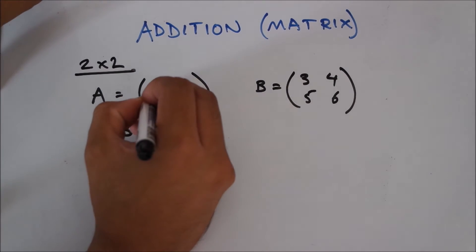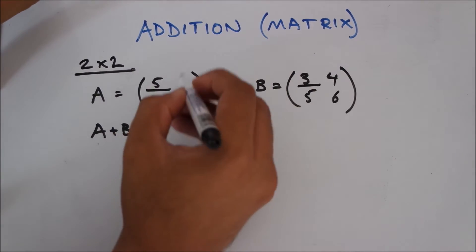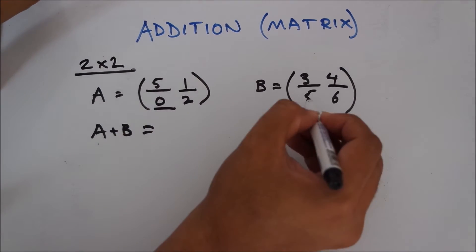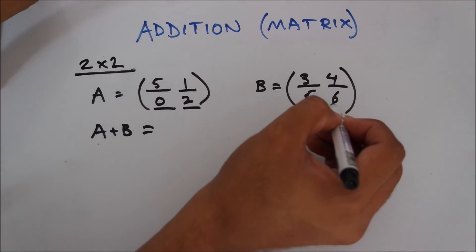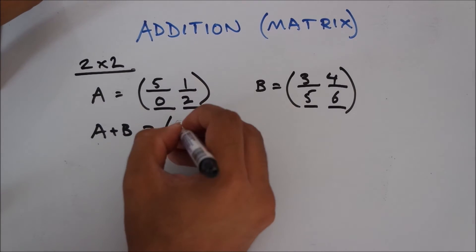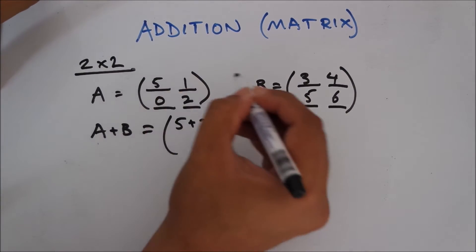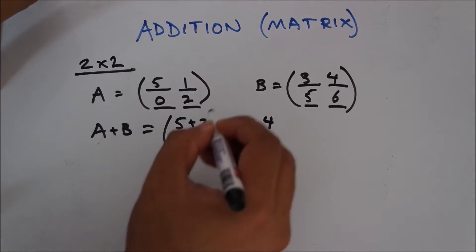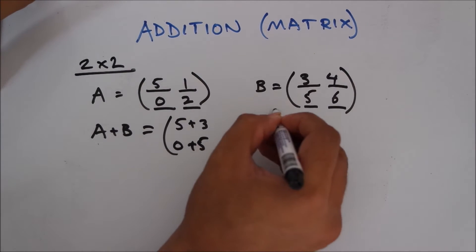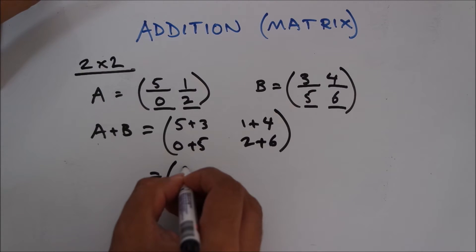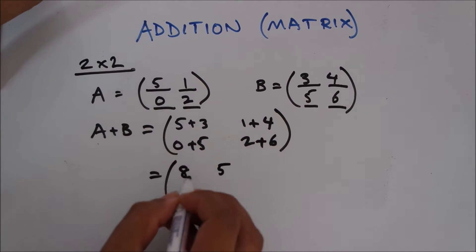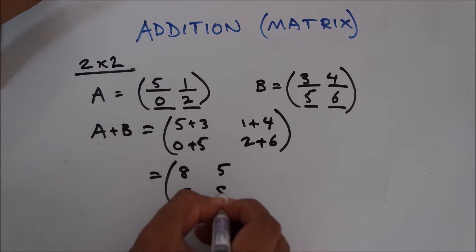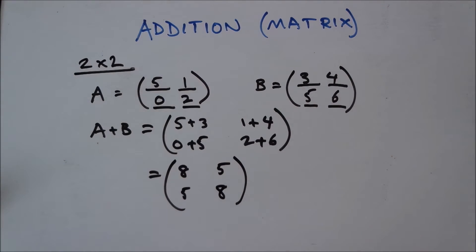To make it simple, you add 5 with 3, 1 with 4, 0 with 5, 2 with 6. So 5 plus 3, 1 plus 4, 0 plus 5, and 2 plus 6. You get 8, 5, 5, 8. That's your answer. So addition on a 2 into 2 matrix is pretty simple, and so is the 3 into 3 as well.